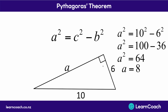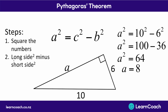Just to recap on those steps: if you're finding one of the short lengths, you're still going to square the two numbers that you know. But this time you take the long side squared — the 10 squared — and subtract the other short side squared, the 6 squared. That gives you a squared. Finally, square root your answer because you want to know a, not a squared.